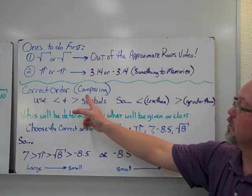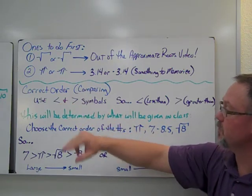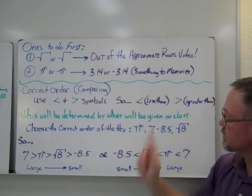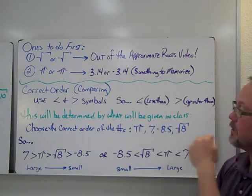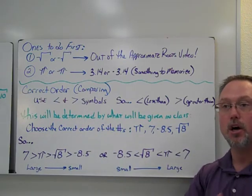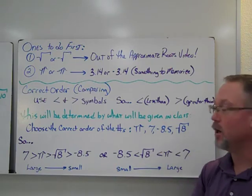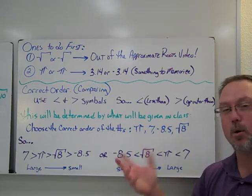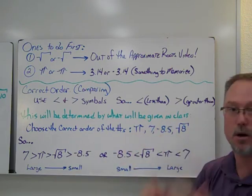With the correct order, this is comparing. So we're going to use the symbols that you've used before. So the one that points to the left is going to be less than. The one that points to the right is going to be greater than. This will be determined by what will be given in class. So I'll either tell you go greater to less, less to greater in that direction. So I'll give you both of them so you can kind of see how it plays out. But if you can do it one direction, you just flip it around and get the other one.